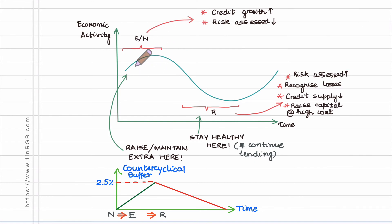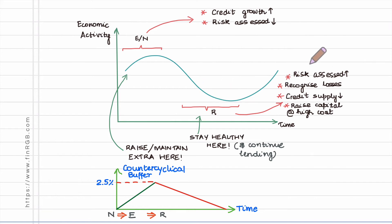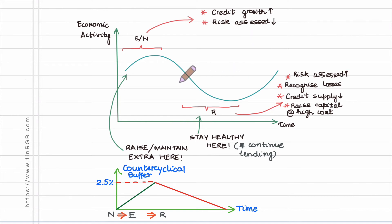When the time and tide actually turns and you enter a recessionary phase, banks collectively speaking find that their risk assessments go up. The probabilities of default which the systems are now producing are higher than long-term averages.